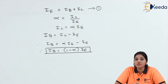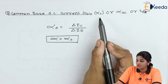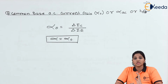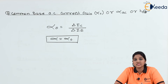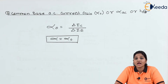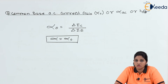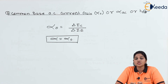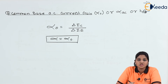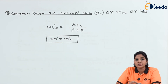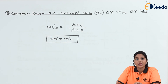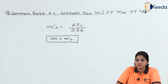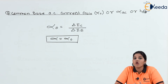Now let's move to the common base AC current gain. The common base AC current gain is denoted by alpha_0, or alpha AC, or h_fb (small). DC current gain is denoted by H_FB (capital) and AC current gain by h_fb (small). Since the signal is alternating, we consider the change in the signal. AC current gain is defined as the ratio of change in output current to change in input current. So, alpha_0 is defined as the change in collector current IC to the change in emitter current IE. Practically, the value of alpha is approximately equal to alpha_0. This current gain is also called the short circuit current gain or small signal current gain.